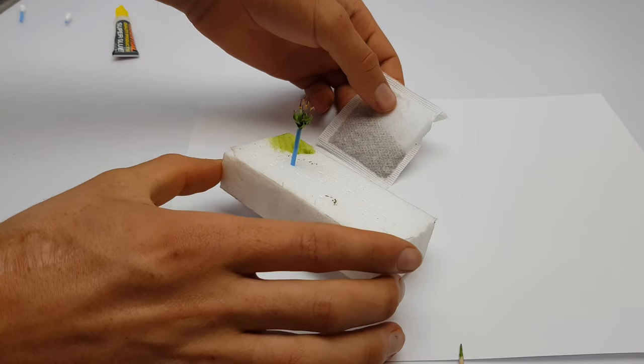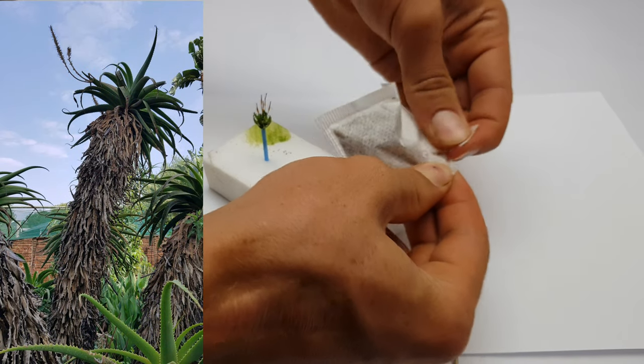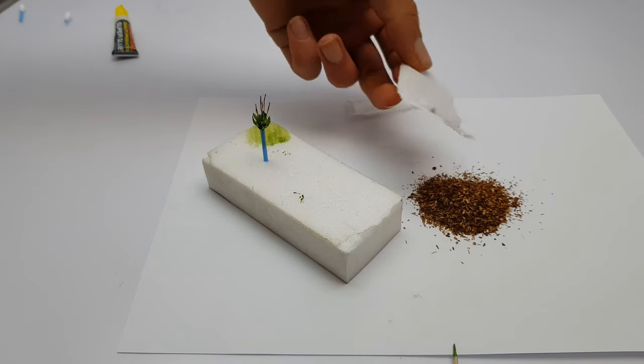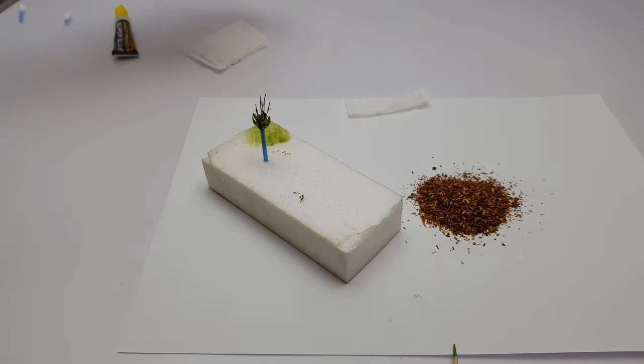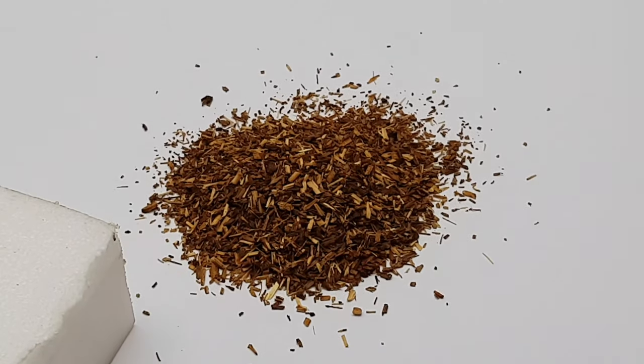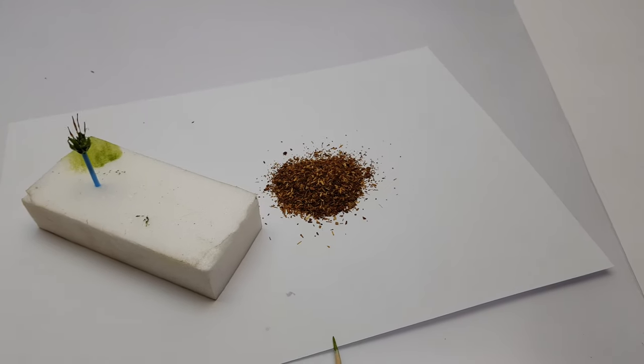Now it's time for adding the dead leaves or bark onto the stem of the aloe. For that I'm using rooibos tea. But if you don't have access to rooibos tea then you can just go outside and collect some real bark and grind it up in a blender and get similar results.